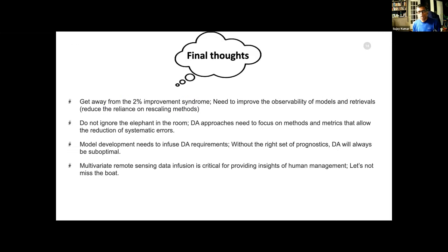I'm just going to leave with these final thoughts. We need to get away from this two percent improvement syndrome. We need to kind of take a harder look at our models and our observations and focus on improving the observability of these models and retrievals. The biases are a big issue. We need to have data assimilation methods that actually address them. We also need to talk to the model development community so that we can infuse the DA requirements so we can have the right prognostics. Finally, I think the multivariate remote sensing infusion is critical for insights of human management and this is why I think land is unique. This is a huge opportunity for land data assimilation. I'll stop there.